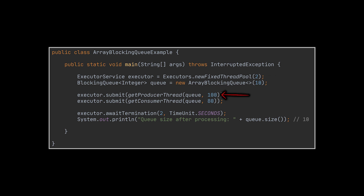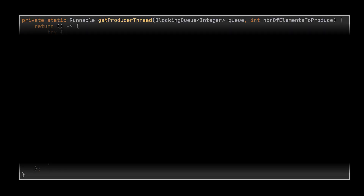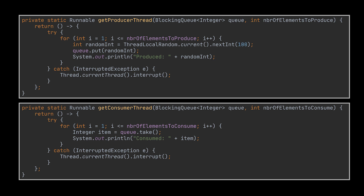The producer thread produces 100 items but the queue can only hold 10 at a time. The producer blocks when the queue is full, waiting for the consumer to consume items. Since the consumer will only consume 80 items, when we stop waiting for the threads to execute, we will find that the queue is full and the producer is still waiting for an empty space to continue inserting the remaining 10 elements.